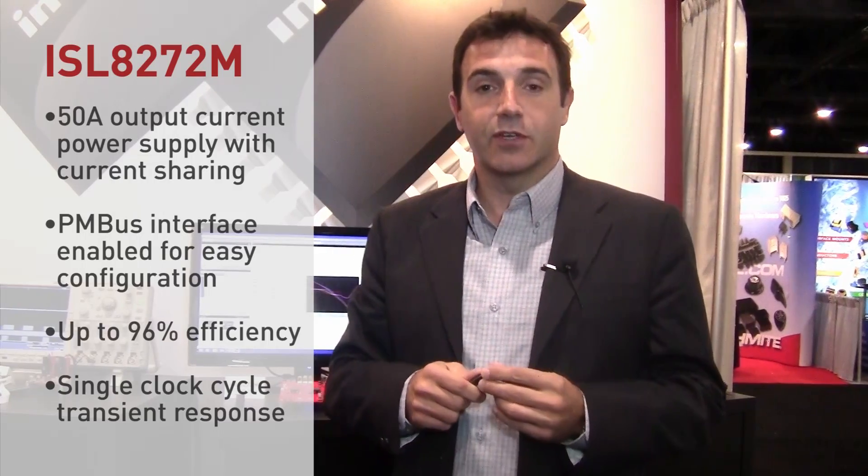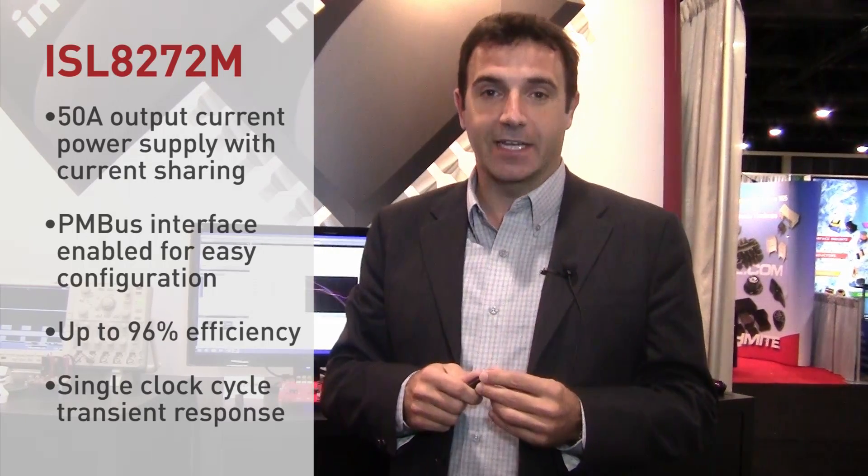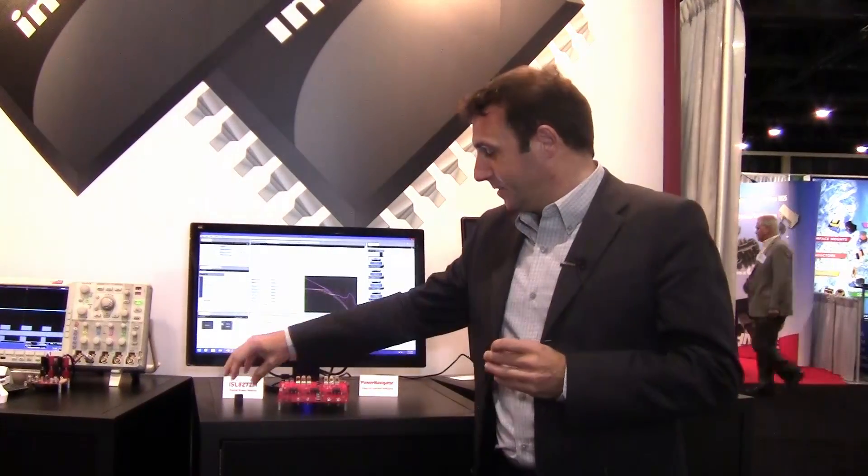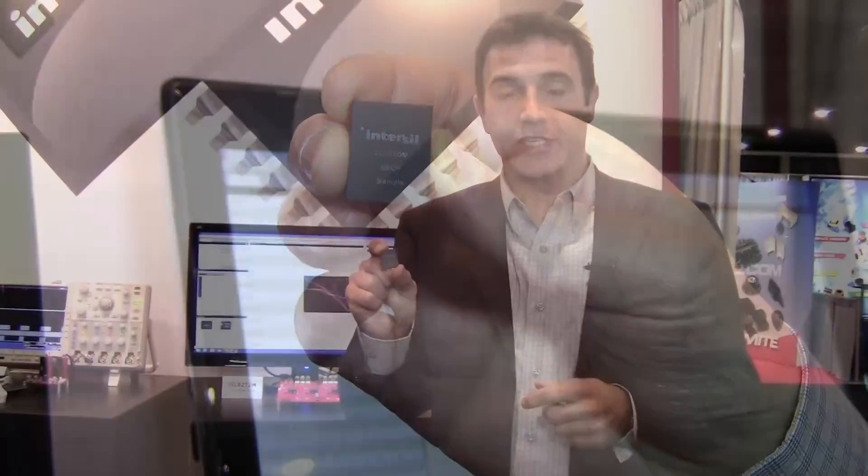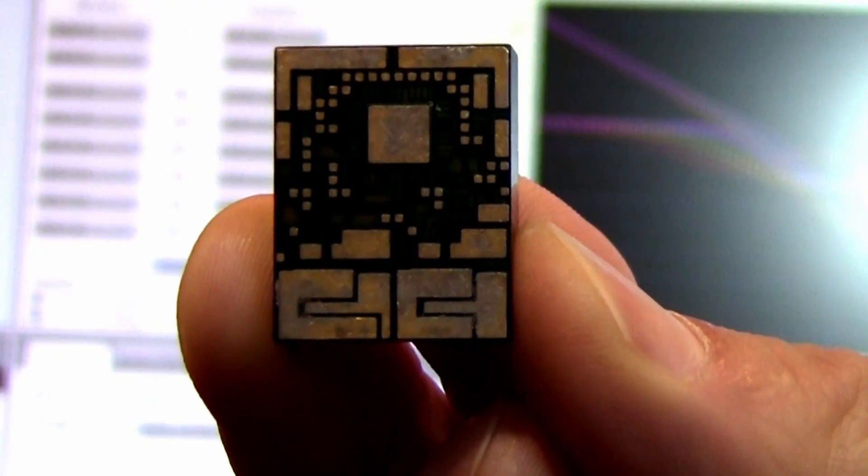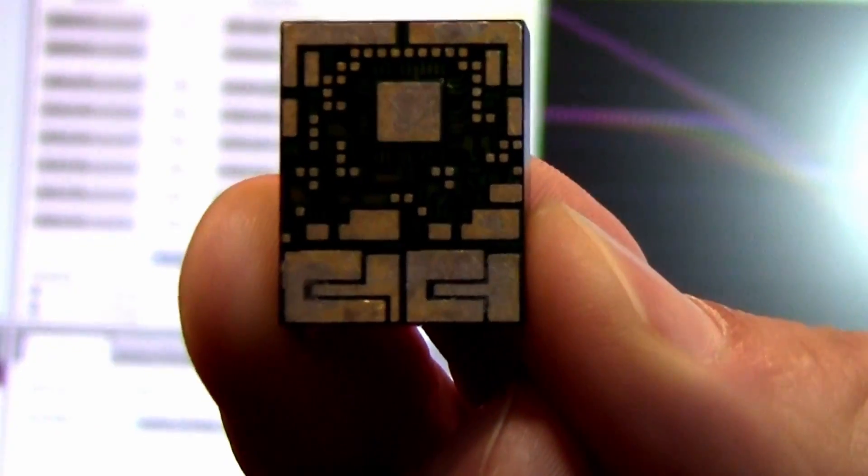It also offers a single clock cycle fast transient response to output load steps. The ISL8272M is offered in a compact 18 x 23 mm HDA package that offers great thermal performance and allows this device to operate at continuous currents of up to 50 amps without any heat sink or specific airflow.